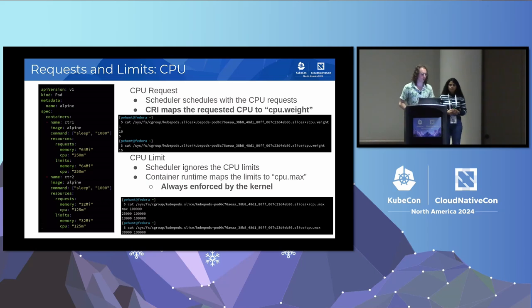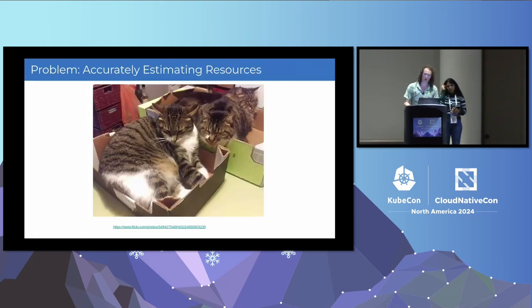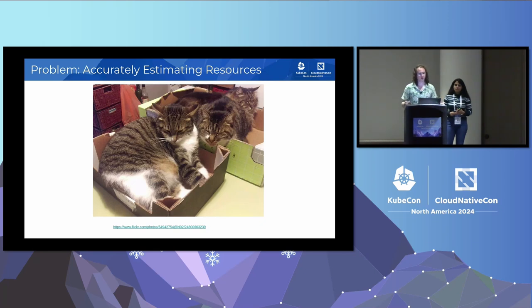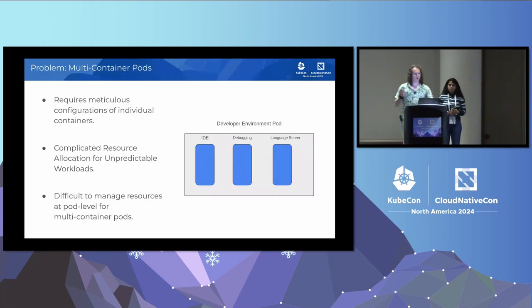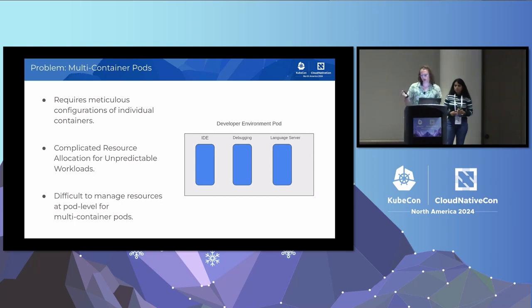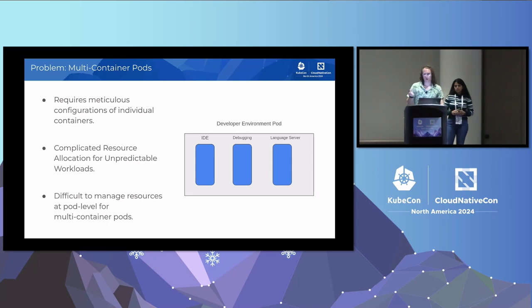But as many of you probably know, this is not a fully comprehensive solution — there are some cases it doesn't work well for. It's like trying to fit cats in boxes; sometimes they don't fit perfectly. The first situation is in multi-container pods — imagine you have a development environment pod with one container running your IDE, one for debugging, and one as a language server. When you create this pod, you have to know exactly how much each container is going to use, which requires a decent amount of understanding of the workload and is hard to predict. This is the motivation for projects like Vertical Pod Autoscaler.